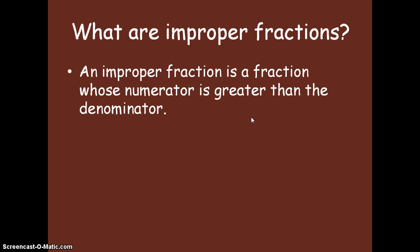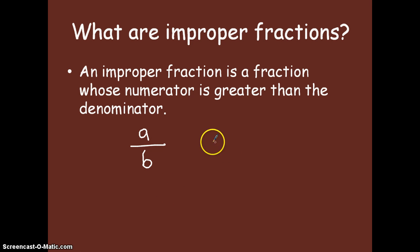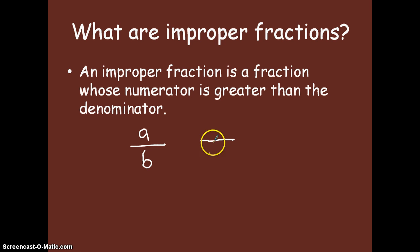What are improper fractions? An improper fraction is a fraction whose numerator is greater than the denominator. Our numerator, in this case A, will be greater than our denominator, in this case B, to give us an improper fraction. So as long as our numerator is greater than our denominator, we have an improper fraction.